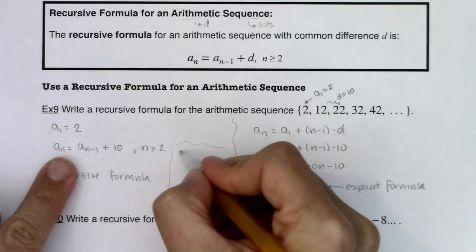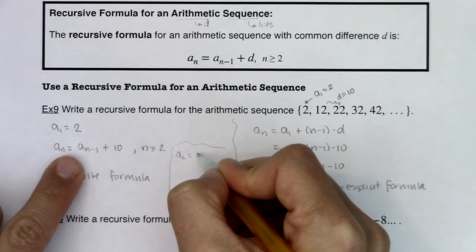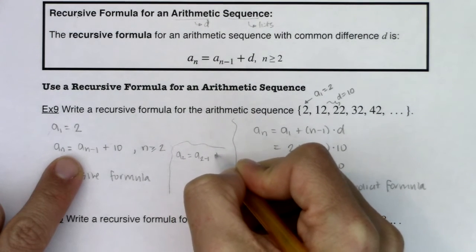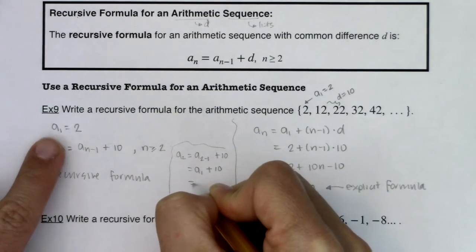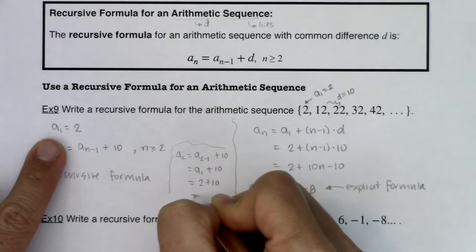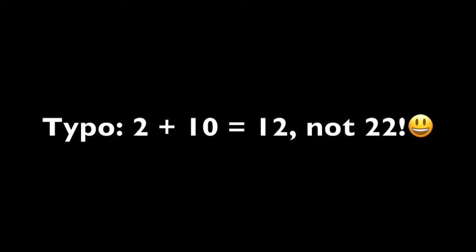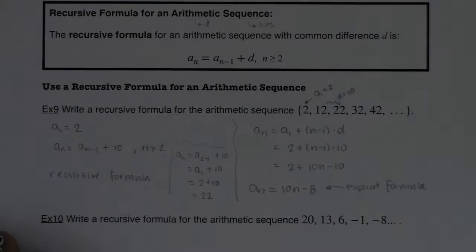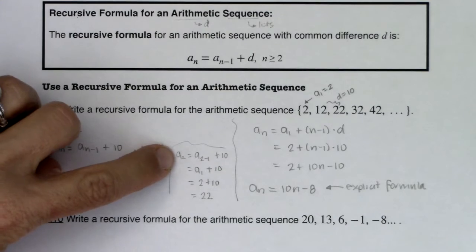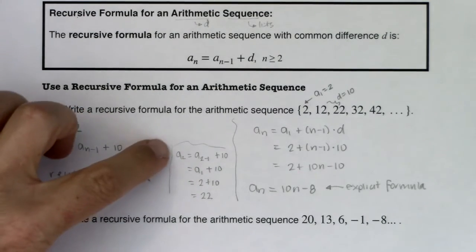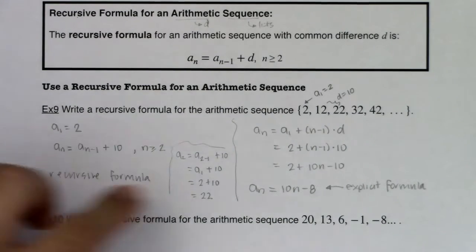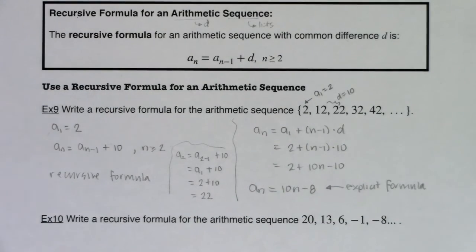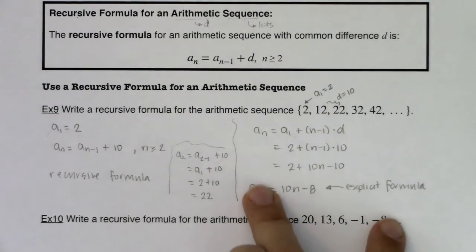Now let me show you this. If I did a sub 2, that would be equal to a sub 2 minus 1 plus 10. Well, 2 minus 1 is 1, so this is a sub 1 plus 10. We knew a sub 1 was 2. 2 plus 10 is 12. So a sub 2 was defined in terms of the previous term. We were recursing back to a previous term. So this is the recursive formula. This is the explicit formula. This was the one that was asked of us. But I just want you to see what we're looking at now and how it relates to what we have done in examples 1 through 8.